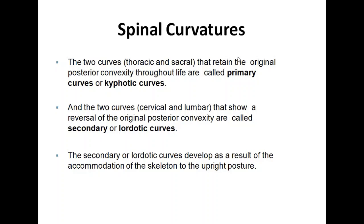In adaptation to the primary kyphotic curvatures, there is development of secondary curvatures, which are lordotic curvatures — like in our cervical and lumbar spine. These are just adaptations to the kyphotic posture of the body. They develop as a result of the accommodation of the skeleton to the upright posture. There is an advantage to these curves. The spine is made up of different segments containing vertebrae — it is not like a rigid rod.